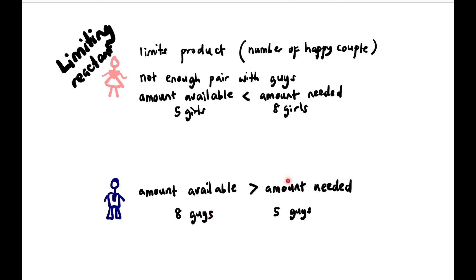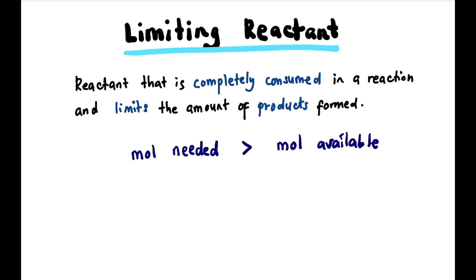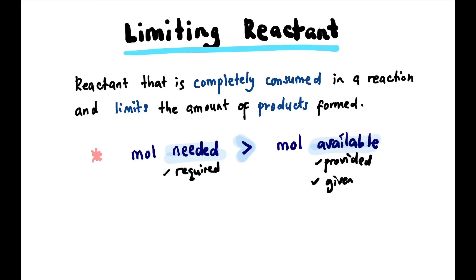The guys — the amount available is eight and the amount needed is five, so we have more than what we need, making it the excess reactant. So basically, the limiting reactant is the reactant that is completely consumed in a reaction (habis dipakai) and limits the amount of product formed. The tip to identify the limiting reactant is to compare moles, because stoichiometry is a mole comparison. If moles needed is more than moles available, it is the limiting reactant. 'Needed' can also be called 'required'; 'available' can be called 'provided' or 'given'.